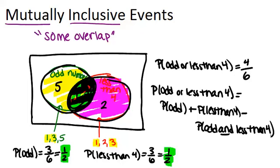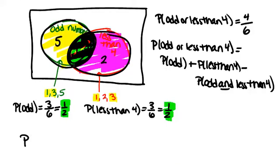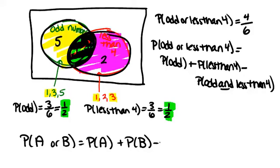This leads us to a general formula for calculating the probability that two events could happen, one or the other. In general, the probability that A or B occurs will be the probability that A occurs plus the probability that B occurs minus the probability that they both occur at the same time, and that minusing part accounts for any possible double counting.